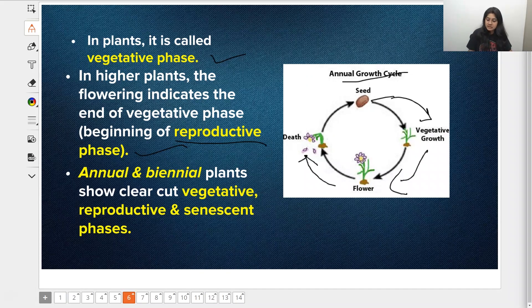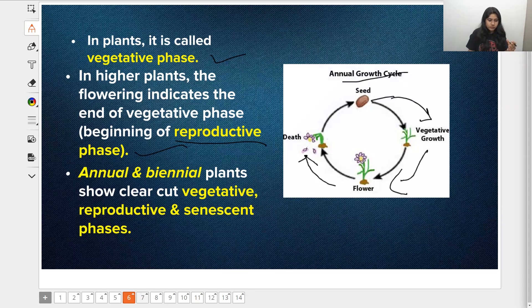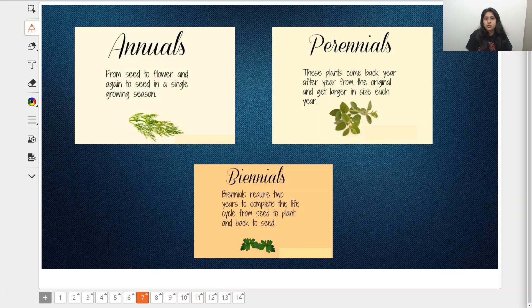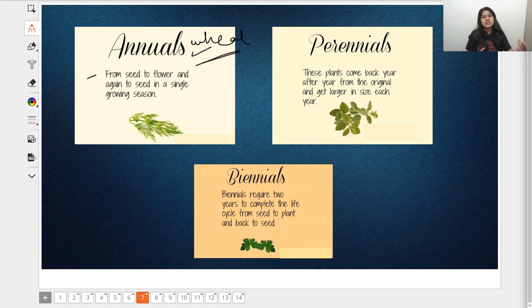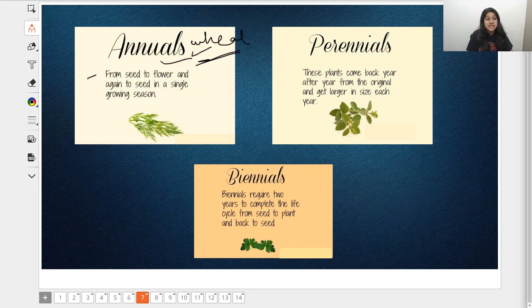This particular phase where the plant produces flowers is called the reproductive phase. Based on that, plants have a clear division into annual, biennial, and perennial plants. There are three types. Annual plants, for example wheat, grow in a single season. They won't wait for another season to bloom or produce flowers. In one season, everything is done. The crops we have, like pulses, usually fall under this category.